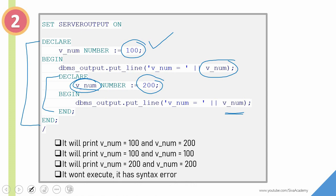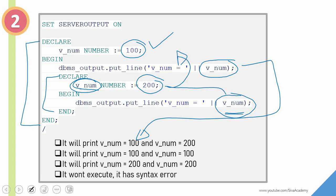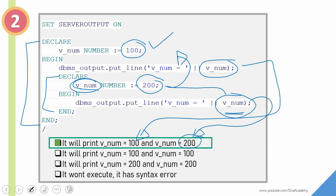We can define the same variable — or a variable with the same name — in both the outer block and the inner block; it will not throw any error. Always the local variable takes precedence over the global variable. So the outer block variable gets printed first from its DBMS output line. Then when the inner block executes, the inner block value overrides the outer block variable, so the inner block prints 200. The right answer is 100 and 200.